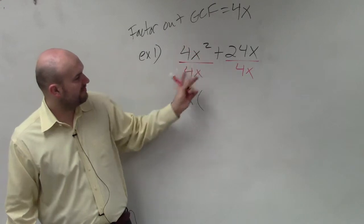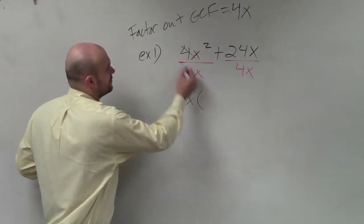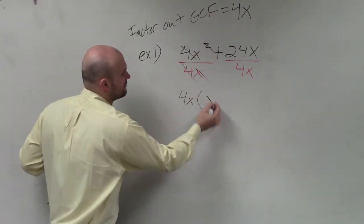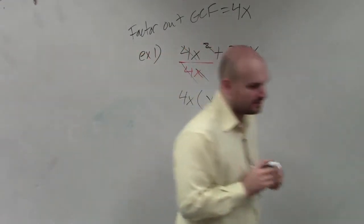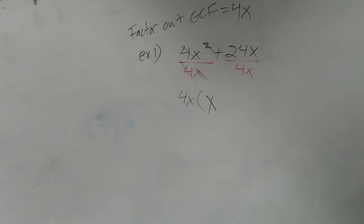So 4x squared divided by 4x is just left with x. Please let me know if you guys have any questions on my divisions of polynomials.